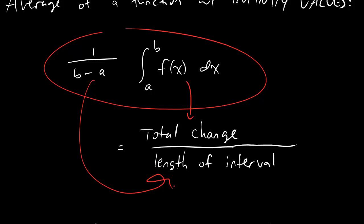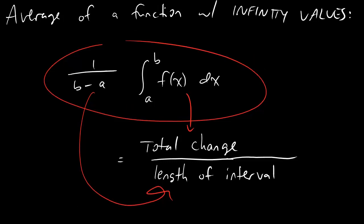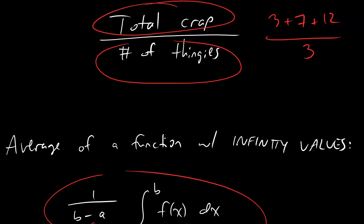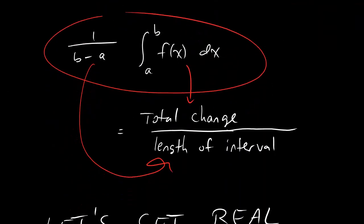So the equation for that is super easy, and you can just think about that as total change, because that's what integral represents, and then what we're dividing by is the length of the interval. So that's the formula, and the formula is analogous to that same thing we're looking at here. Instead of total crap, we have total change, and instead of the number of thingies, we actually just have the length of the interval.